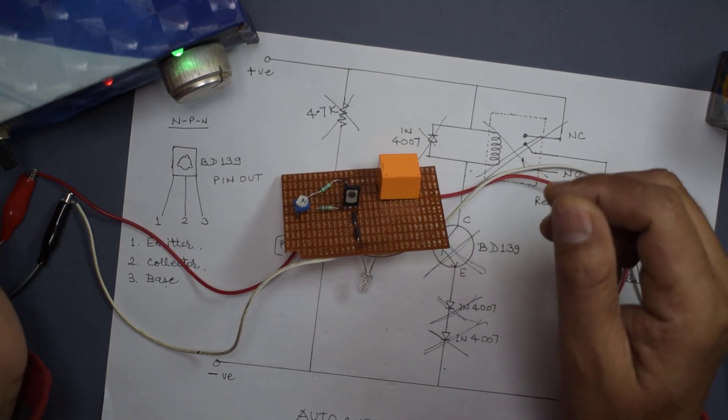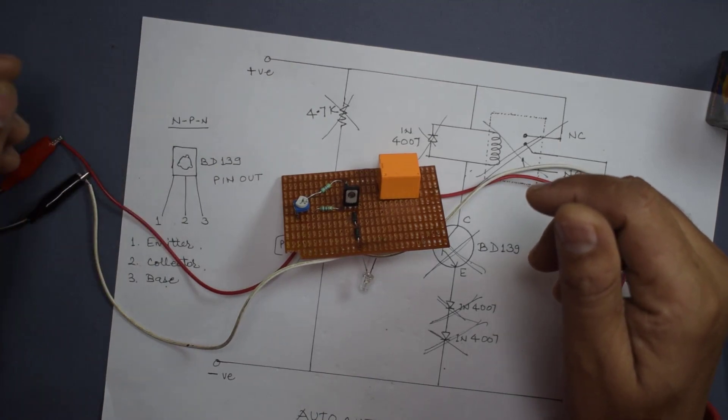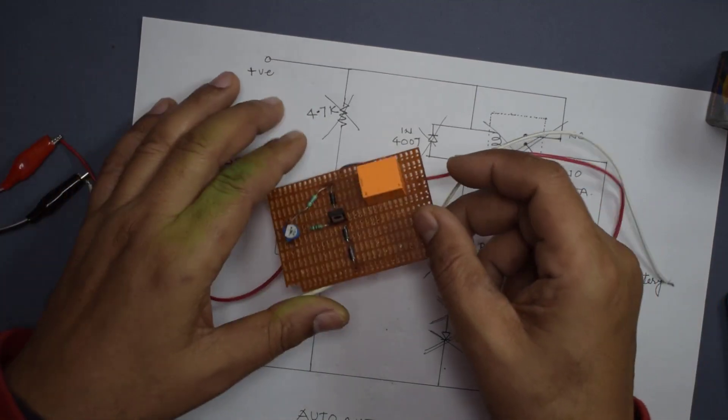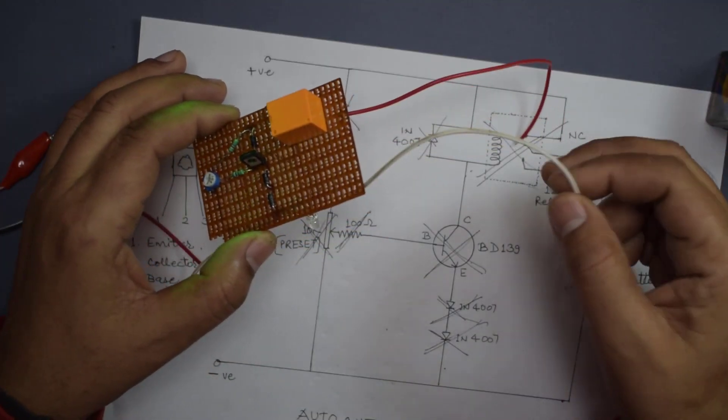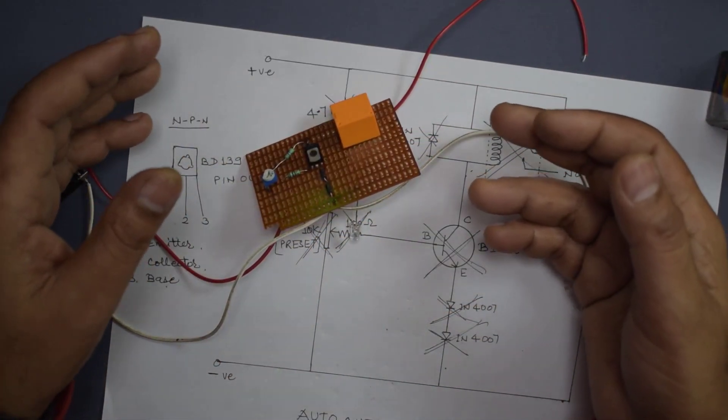So friends, this was a battery protection circuit diagram, overcharging protection circuit diagram for your battery, or you may charge your lithium-ion cell with this voltage according to the need of battery.